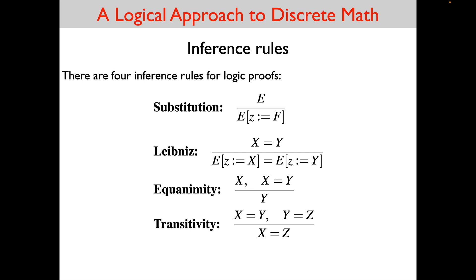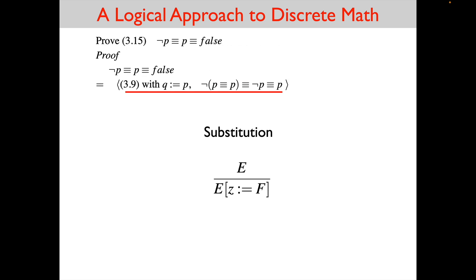Let's look at substitution. In the first step of our proof of 3.15, we used 3.9 with Q replaced by P — that is an example of substitution. The capital E in the substitution inference rule is 3.9, the lowercase z is our variable Q, and the expression capital F is P. Substitution allows us to get 3.9 into the form we needed to use in the first step of our proof.